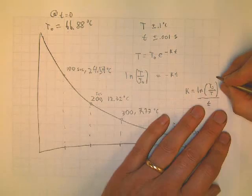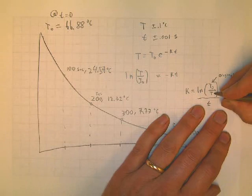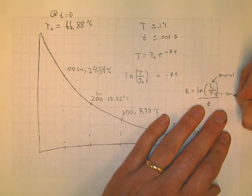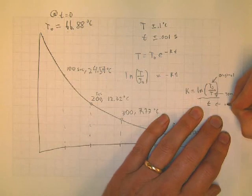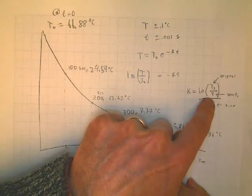Now, if K is a constant and we calculate it one, two, three, four, five times, it should be the same, but maybe it won't be. So this is something we can talk about. If our hypothesis is correct, then K will be the same.